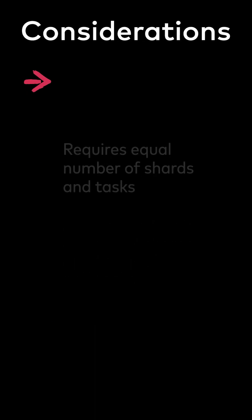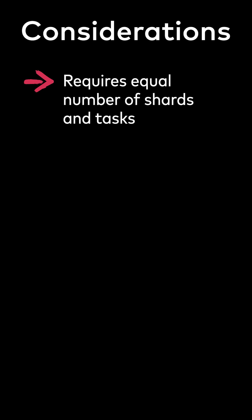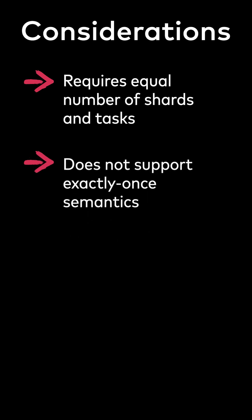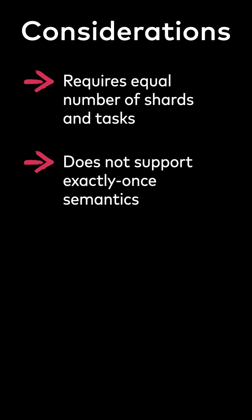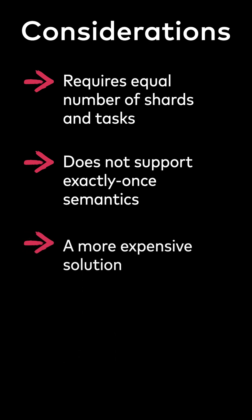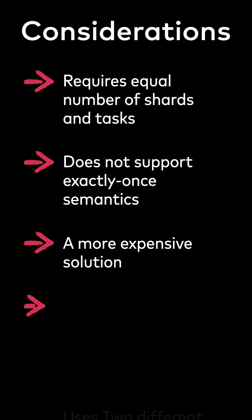Key considerations: the connector requires an equal number of shards in Kinesis and tasks inside the connector, which makes it incompatible with Kinesis On-Demand, which scales shards dynamically. It also doesn't support exactly-once semantics, which might lead to duplicate records inside Confluent.